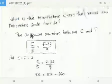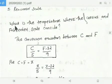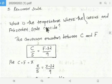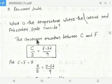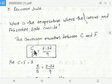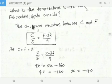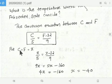The first question: what is the temperature where the Celsius and Fahrenheit scale coincide? This is an important interview question. The conversion equation between Celsius and Fahrenheit is C/5 = (F - 32)/9. As per the question, at what value will both scale temperatures be equal?